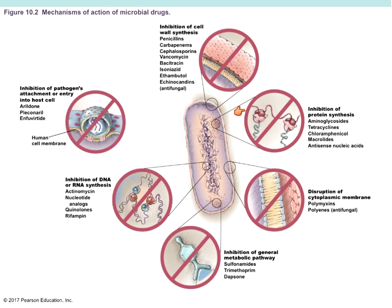Through antisense nucleic acid approaches, if the bacteria can't make its proteins — the workhorse of the cell — we're not directly targeting cell structures like we do with cell wall inhibition, but targeting cell genetics. If the bacteria can't make the appropriate proteins needed for metabolism and cell structure, it's more of an indirect attack, and the bacteria will die.